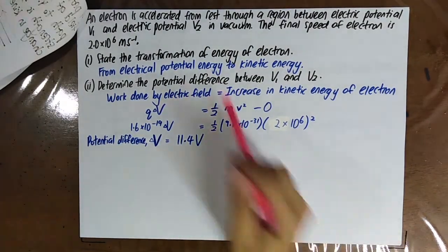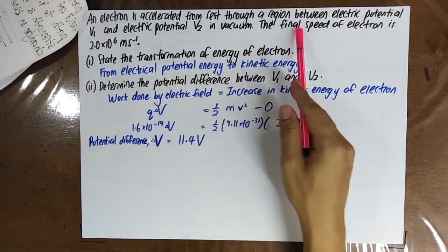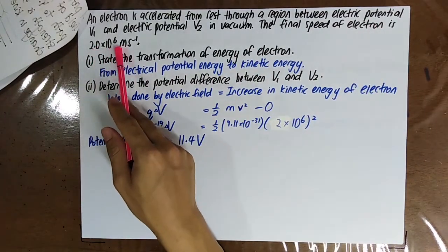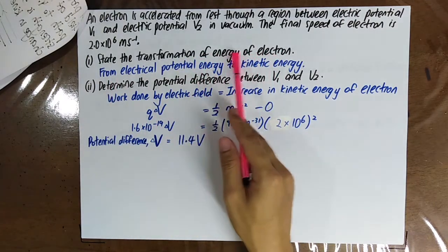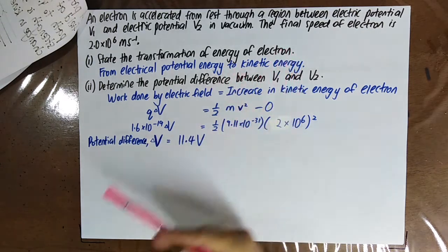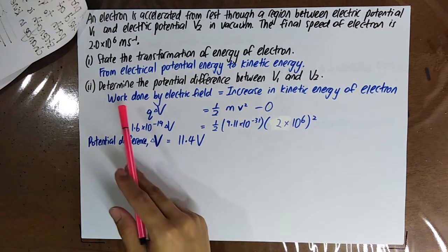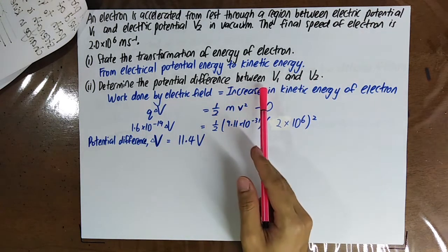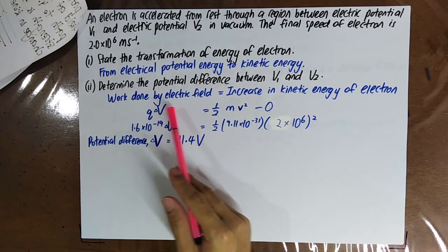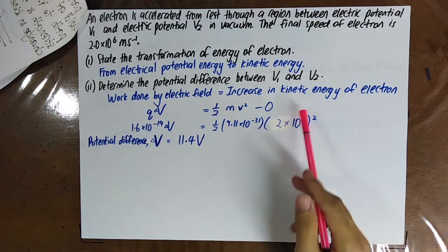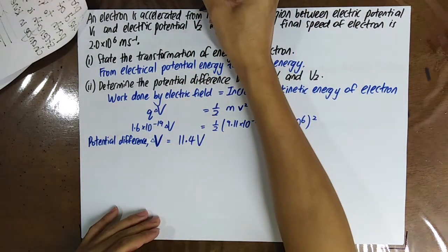An electron is accelerated from rest through a region between electric potentials V1 and V2 in vacuum. The final speed of the electron is 2×10⁶ m/s. The transformation of energy is from electrical potential energy to kinetic energy. To find the potential difference between V1 and V2: work done by the electric field equals the change in kinetic energy, so q·ΔV = ½mv² − ½mu². Since it starts from rest, u = 0.